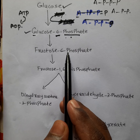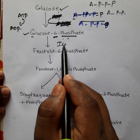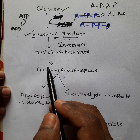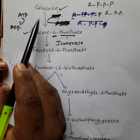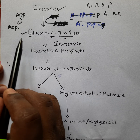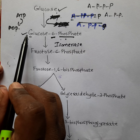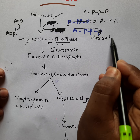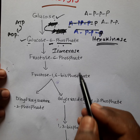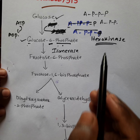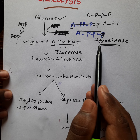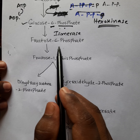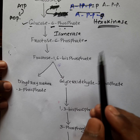After that, glucose 6-phosphate converts into fructose 6-phosphate. This process is activated by the enzyme isomerase. So far we have discussed two enzymes: hexokinase and isomerase.